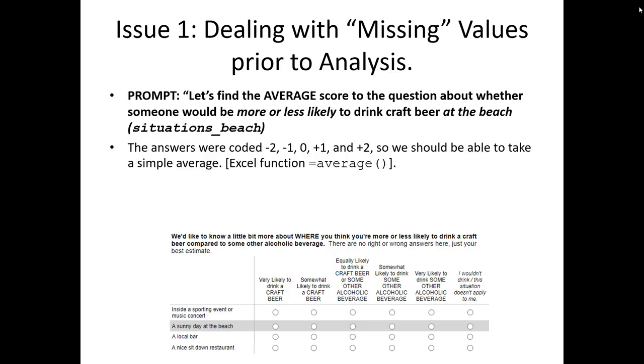Look at one of the survey questions we have in our craft beer data set where we ask people whether they'd be more likely or less likely to drink a craft beer versus an alcoholic beverage at various locations. Importantly, the answers to these questions were coded from negative 2 to positive 2. Positive 2 meaning they're very likely to drink a craft beer, and negative 2 meaning they're much more likely to drink some other alcoholic beverage. Now maybe we want to take an average score for these questions, for example, these situations on the beach. But before we use a simple average function in Excel to score this, we have a challenge.